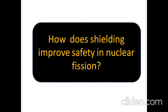What is shielding and how does shielding improve safety in nuclear fission? Nuclear reactors are designed to minimize the risk of exposure to ionizing radiation. Shielding from the radiation produced in the reactor is provided by the steel casing of the reactor, which is then surrounded by several meters of concrete.